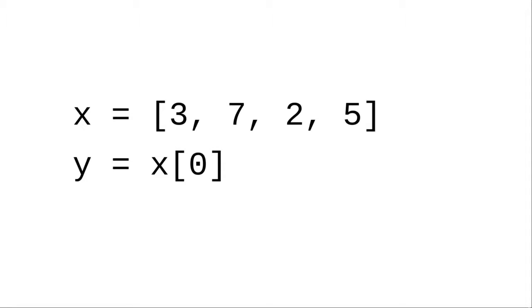Throughout the videos, you may have noticed me reading code like this as x equals 3, 7, 2, 5, y equals x sub zero. What's that sub all about?